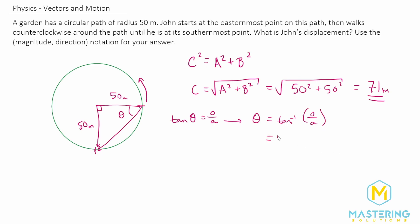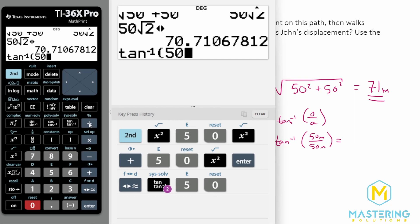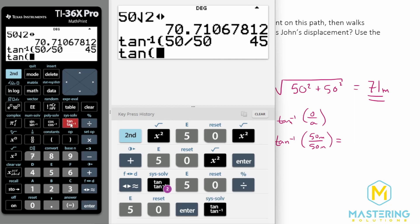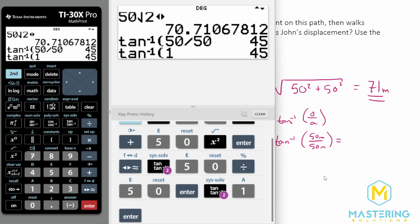So the inverse tangent of 50 meters over 50 meters gives us 50 over 50 or the inverse tangent of 1. So inverse tangent of 1 gives us 45 degrees.